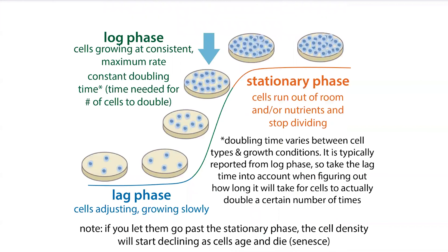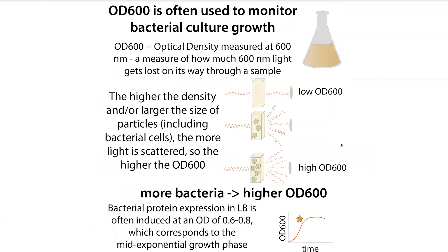When cells are growing, you get this lag phase where they grow slowly as they adjust to their environment. Then you get this exponential or logarithmic growth phase where they double and double and double. But then they reach the stationary phase where they plateau because they run out of nutrients or space. Then you actually start to get a decline because they don't have enough nutrients and start dying out. The kind of sweet spot is typically this mid-exponential range, and we want to know when bacteria are in this range.